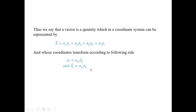So we can say that a vector is a quantity which in a coordinate system can be represented as AI EI, and its coordinates transform according to the law: AI equals alpha-ij Aj-tilde, and AI-tilde equals alpha-ji Aj.